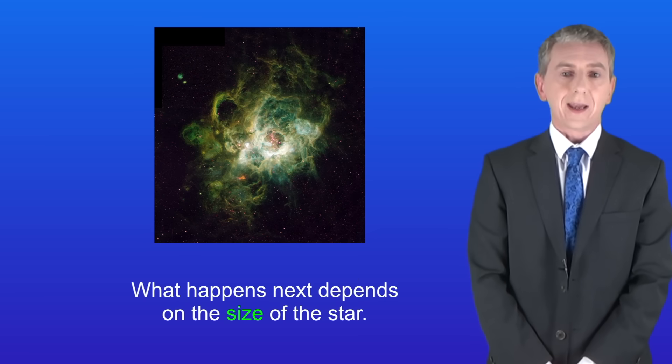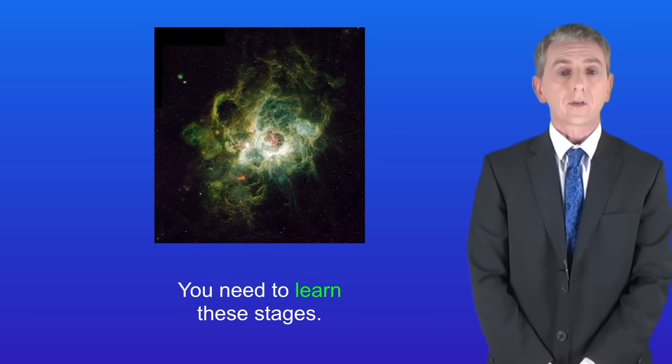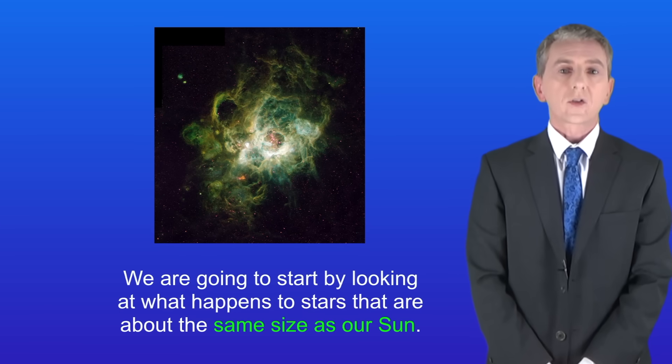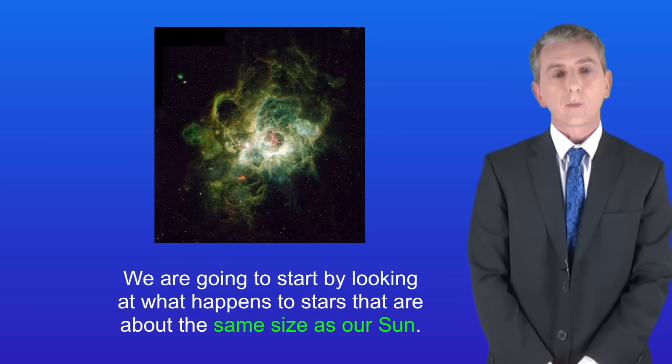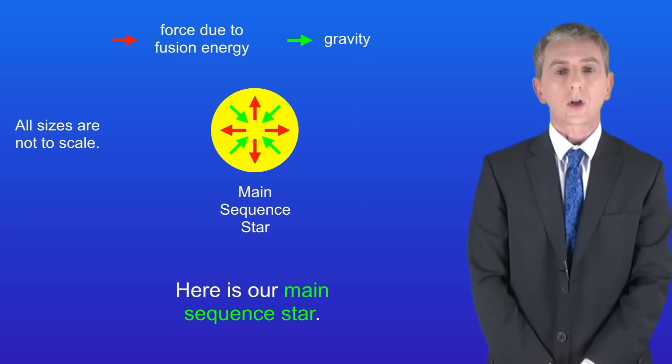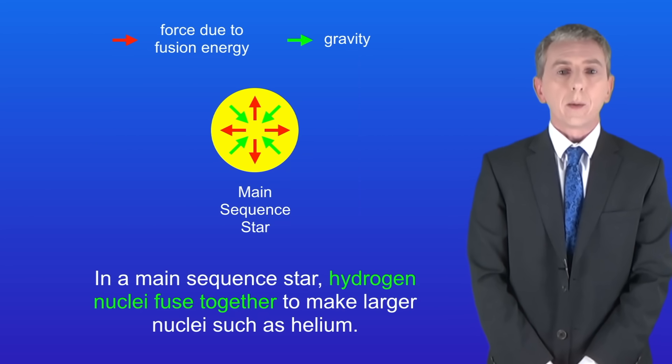What happens next depends on the size of the star, and you need to learn these stages. We're going to start by looking at what happens to stars that are about the same size as our Sun. In a main sequence star, hydrogen nuclei fuse together to make larger nuclei such as helium.